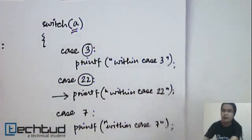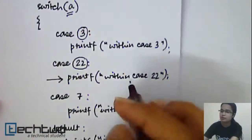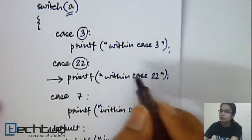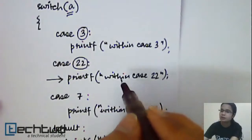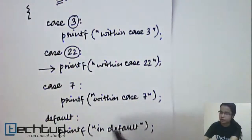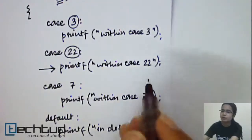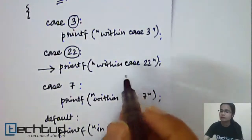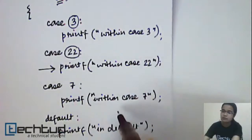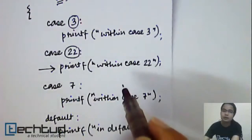And what it will do, it will execute this statement, and all the other statements after it. So what will be printed? It will be printed within case 22, within case 7, and in default. So whenever it is satisfied, if any one of the condition is satisfied, all other conditions after it will be executed.